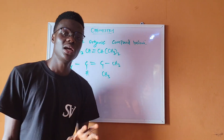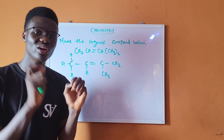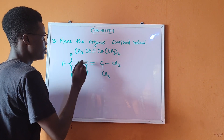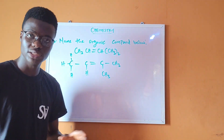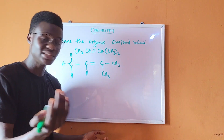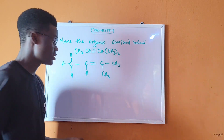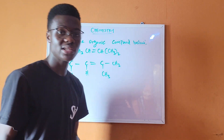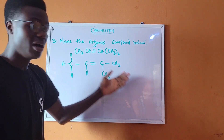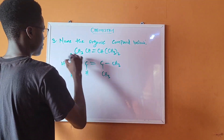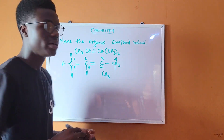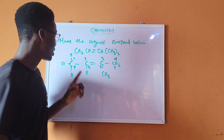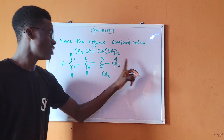To name this organic compound, the first rule is to count the longest continuous carbon chain. The longest chain is 1-2-3-4, giving us four carbons — so the prefix is 'but'. There are two valid ways to number the chain; both give a four-carbon parent chain.